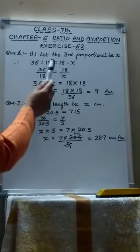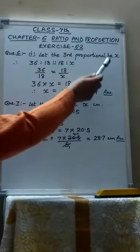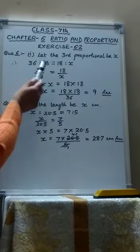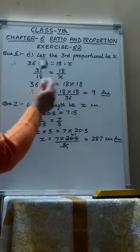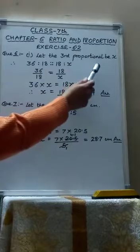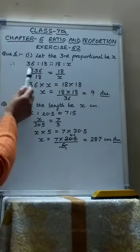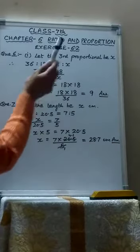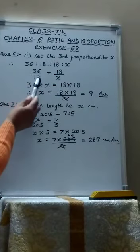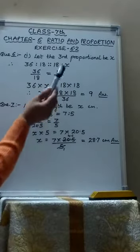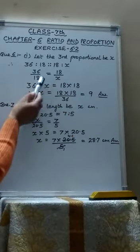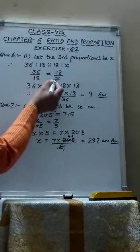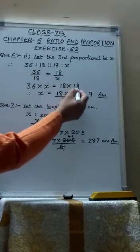The question is that we have to find the third proportional to the numbers 36 and 18. Now we will assume that let the third proportional be x. That means 36, 18, 18 and x are in continued proportion. So that means 36 ratio 18 is in proportion with 18 ratio x. So 36 upon 18 equals to 18 upon x. We can cross multiply.